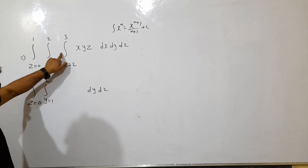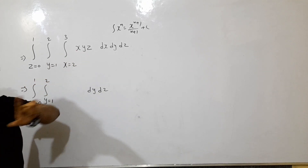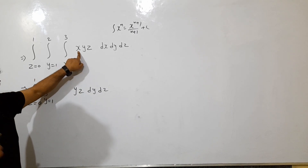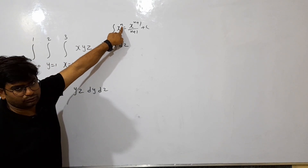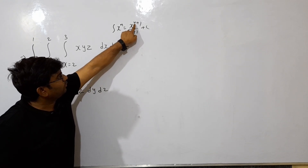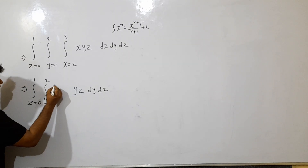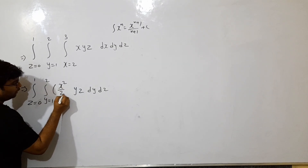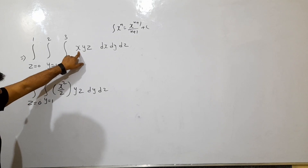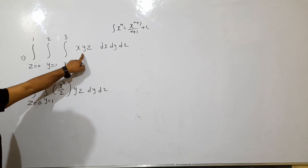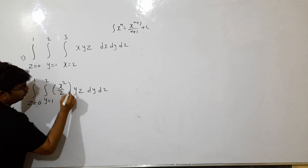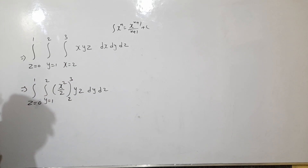So we will talk about x. 1 plus 1 is 2, that means x squared by 2. The integration of x is equal to x squared by 2. If we apply the limits 2 and 3 — here we have 2 and 3 as limits. This video is easy and simple.